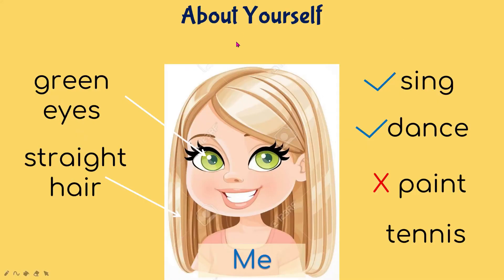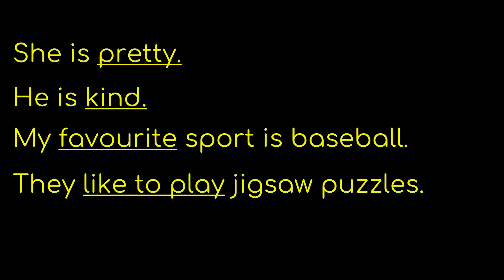Remember, if you want to write about yourself or someone else, you can always write about appearance — the color of your eyes, how your hair looks — and then what you can and can't do. For additional points, you can include how that person looks overall, their behavior, their favorite sport, or what games they like to play. These are just examples; you can also write your own ideas, as long as they are suitable with the topic.